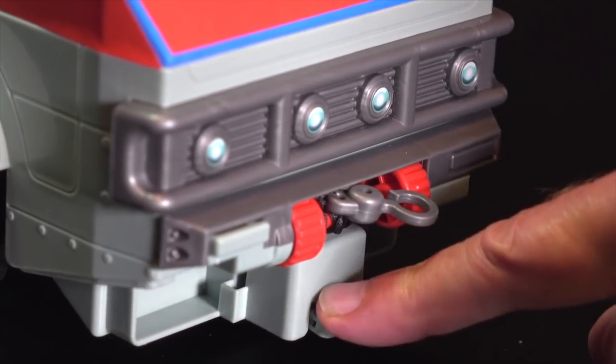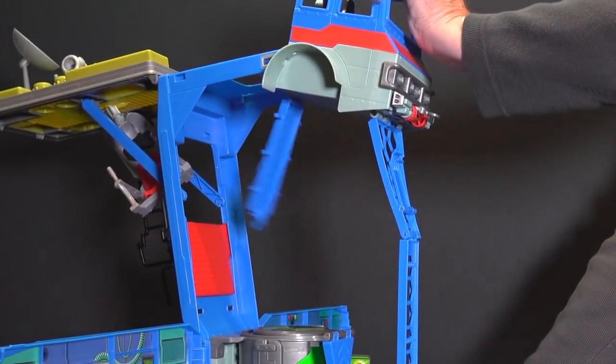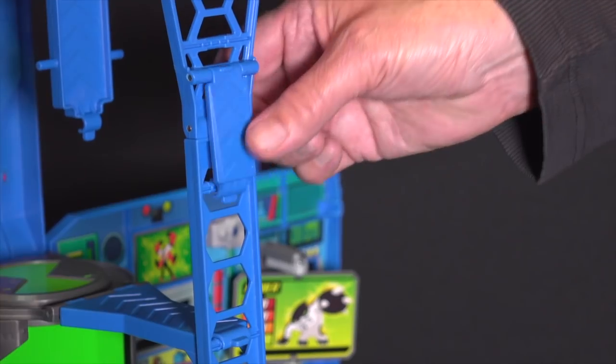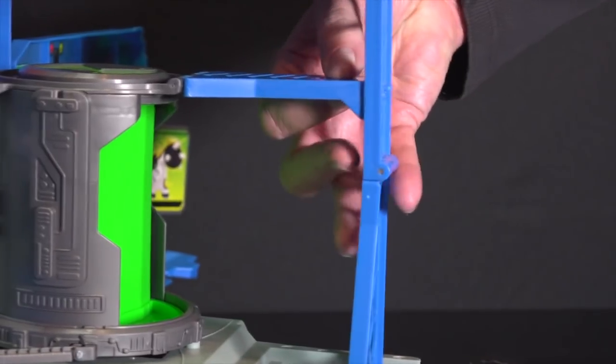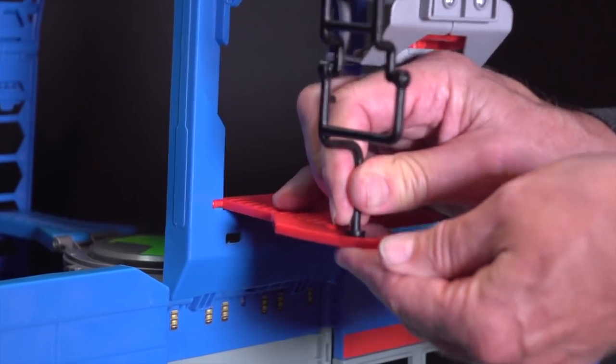Press on the cab release button. Pull the cab forward and then lift up to extend the playset. Snap all three support latches into place. Flip the platform down and attach the ladder.